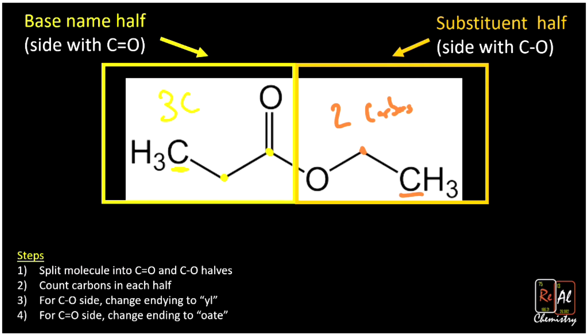By that, I mean you want to write down the base name. So for two carbons, we would have ethane, right? And we're going to change that to a YL ending to make it a substituent-like name. Ethyl. Ah, the ethyl on our ester.